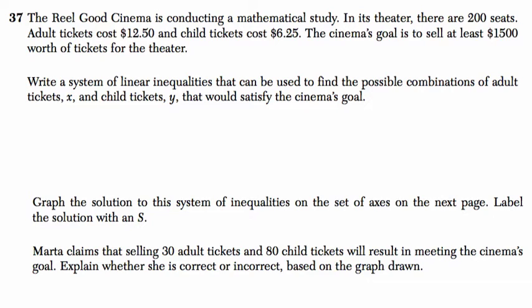It's okay if you feel annoyed by this kind of problem. It says the Real Good Cinema is conducting a mathematical study. There are 200 seats, adult tickets cost $12.50, child tickets cost $6.25. The goal is to sell at least $1500 worth of tickets. Write a system of linear inequalities that can be used to find the possible combinations of adult tickets X and child tickets Y. Adult tickets are X, child tickets are Y. If we add all these tickets, there are 200 seats. So the total amount of tickets has to be less than or equal to 200. That's our first inequality.